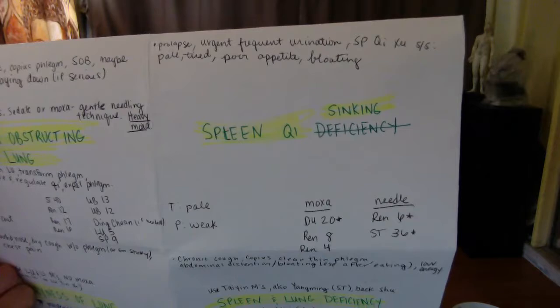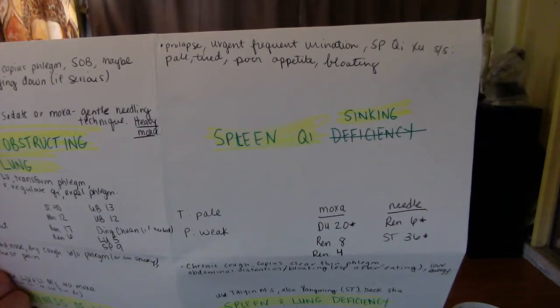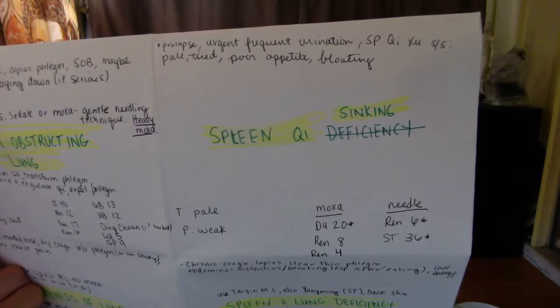Spleen chi sinking: we all know prolapse. Urgent frequent urination. Spleen chi deficiency signs and symptoms also, so you have pale, they're tired, poor appetite, bloating, loose stools, all that fun stuff.